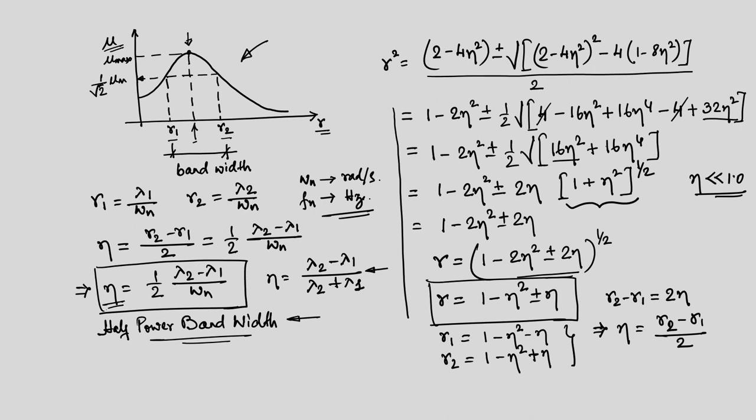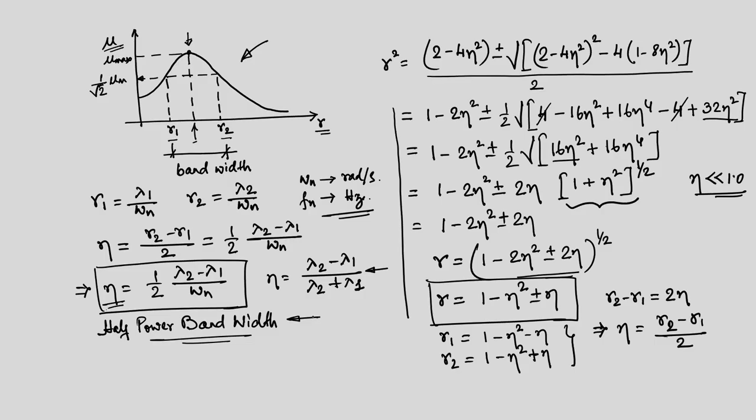The half-power bandwidth technique is an alternate to the logarithmic decrement method discussed earlier. In logarithmic decrement we use the time-history response to quantify damping, whereas here we drive the system using harmonic excitation, find the dynamic magnification for each driving frequency, and from that plot quantify the amount of damping. In our next class we will solve some problems and see how to utilize this to quantify damping.